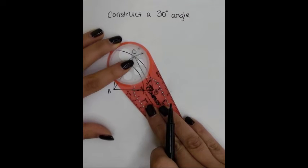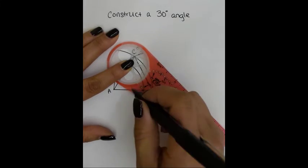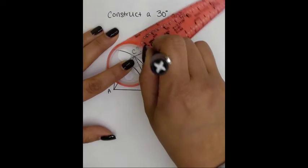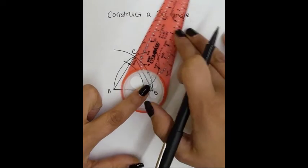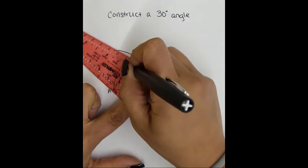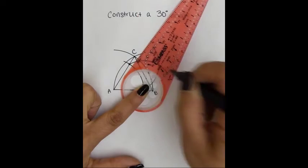So put the eye on the first point of reference, radius on the second, and draw an arc. Move the eye to the other point of reference, and draw the exact same arc.